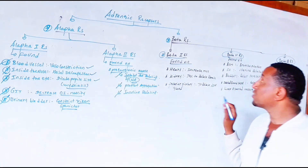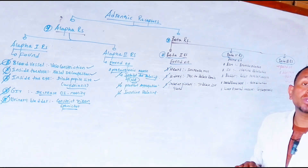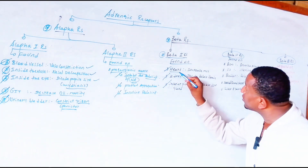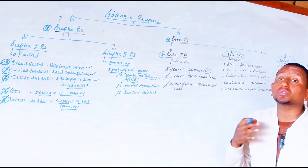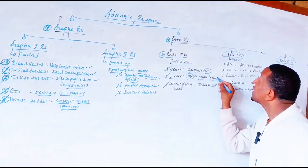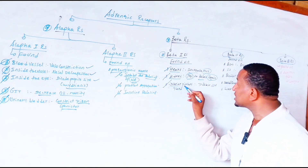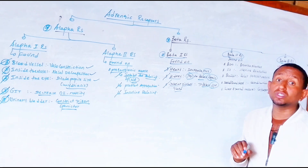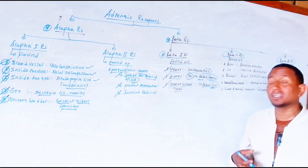Beta 1 receptor is located in the heart. When an adrenergic drug binds with Beta 1, it stimulates increasing myocardial contractility — the heart muscle contractility changes. Beta 1 also causes the kidney to release renin, which is very important for the RAS system — the renin-angiotensin system. Additionally, it stimulates the posterior pituitary gland to release ADH, the anti-diuretic hormone, especially with severe dehydration and severe hypovolemia.